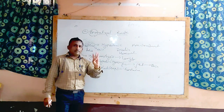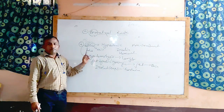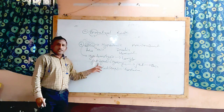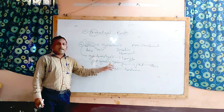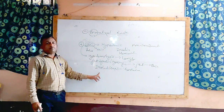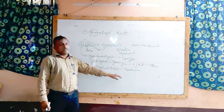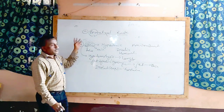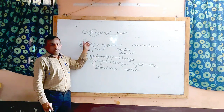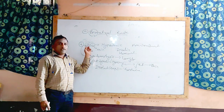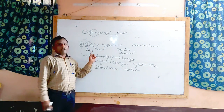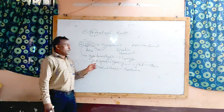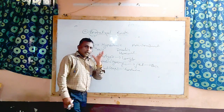So these are the three types under subcutaneous route: hypodermoclysis process, jet injection or hypospray method, and implants or depot formulation. These four injection routes — intradermal, intramuscular, subcutaneous, and intravenous — are very important. For the remaining types, you should know just the definition.